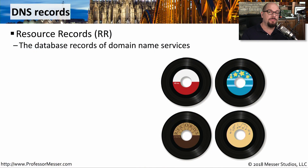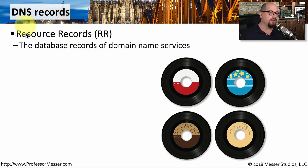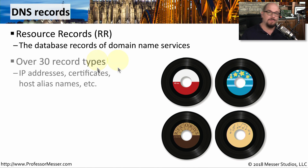Whenever we access a domain name services server to gather information about the name or IP address of a resource, we're really looking through a local database that has all of these associations between a fully qualified domain name and an IP address. We call these records on a DNS server the resource records. It's a text file that contains all of the information we need to perform these lookups. We'll look at a number of different record types in this video, but there are over 30 different types you may find inside of a DNS server.